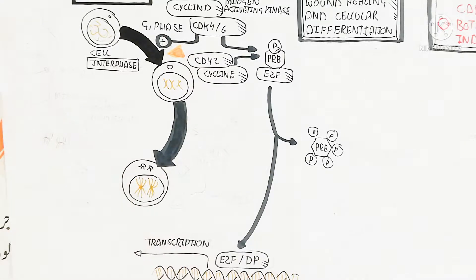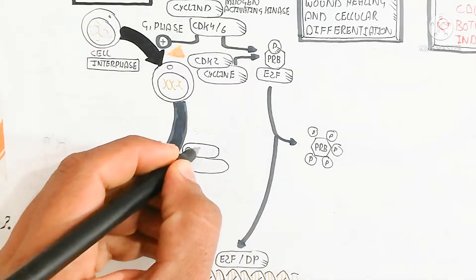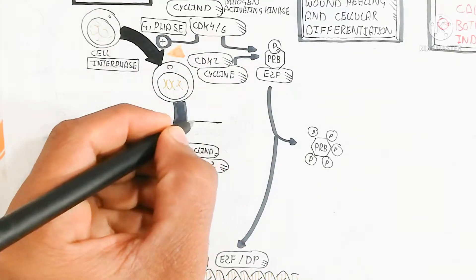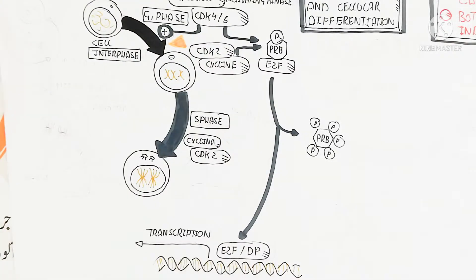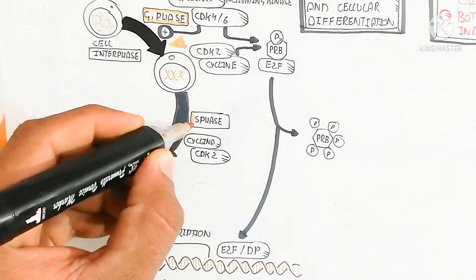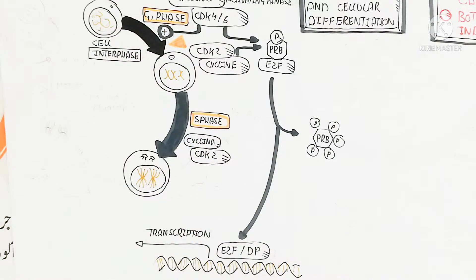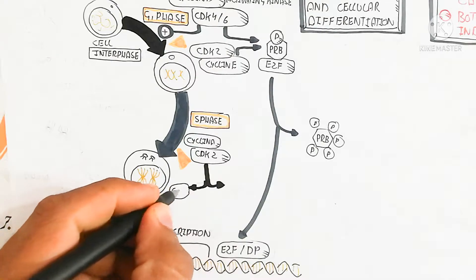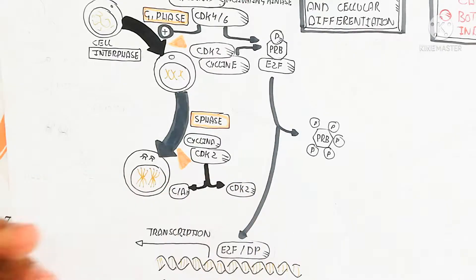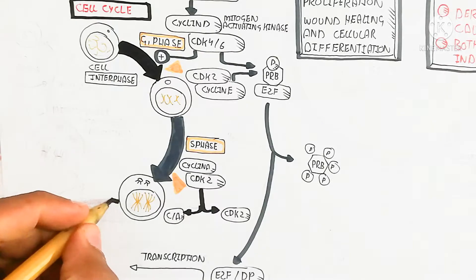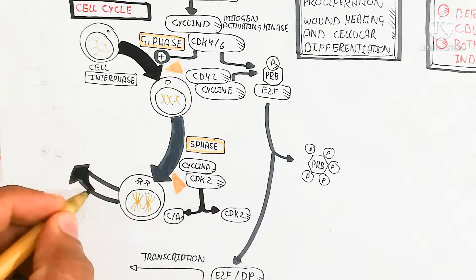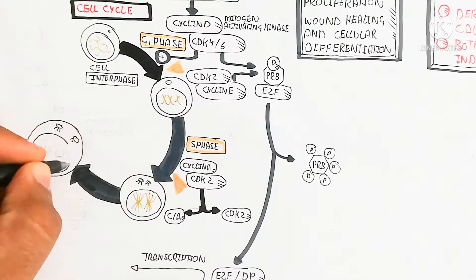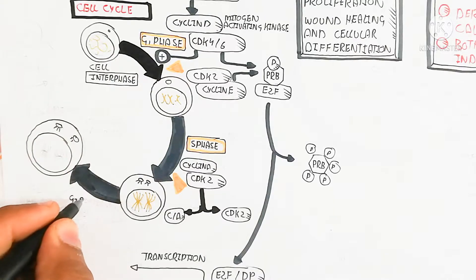If tumor cyclin is produced, the E2F factor will remain bound to the retinoblastoma protein. Cyclin A binds with CDK2; after this binding the S phase occurs. After the S phase is complete, a checkpoint occurs followed by dissociation of the cyclin A and CDK2 complex, allowing the cell to progress to the next phase.